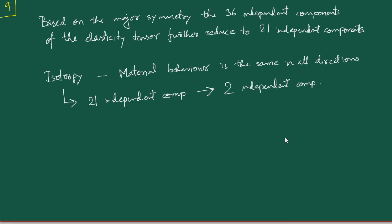Hello everyone. In the previous part of the lecture I had mentioned that under the conditions of isotropic material behavior we have this immense reduction from the 21 independent components of the elasticity tensor to just two independent components. Now let's see how we can have this kind of relationship coming up in a systematic fashion from the fourth order tensor.